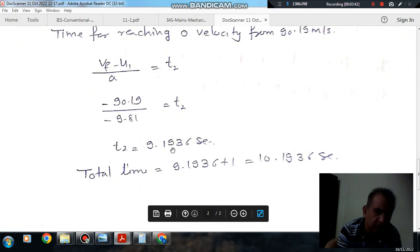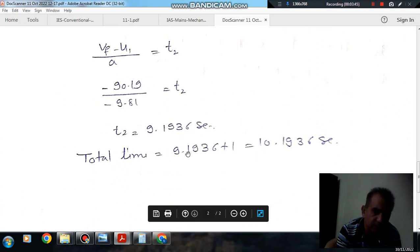So t2 = 9.196 seconds. Total time is t1 + t2 = 1 + 9.196 = 10.196 seconds.